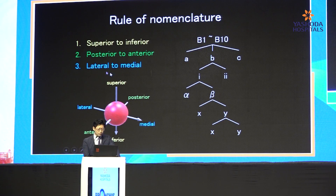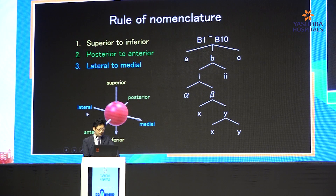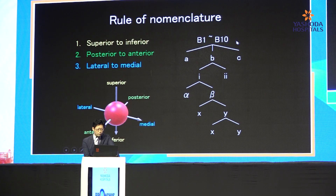The rule is followed by this order: superior to inferior at first, second, posterior to anterior, and next, lateral to medial. Following this rule, we name the bronchial tree.